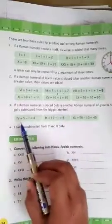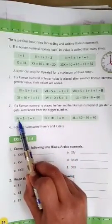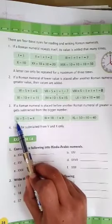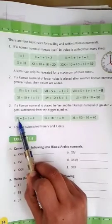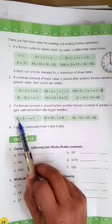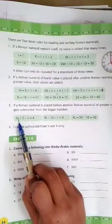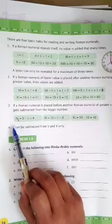Okay. So, this symbol is used for 1 and this symbol is used for 5. So, this is smaller than this symbol. When the Roman numeral is placed before another Roman numeral of greater value, it gets subtracted from the bigger number.